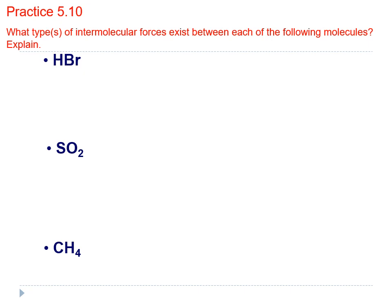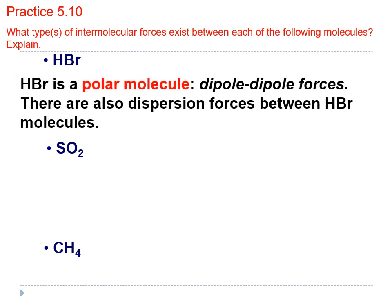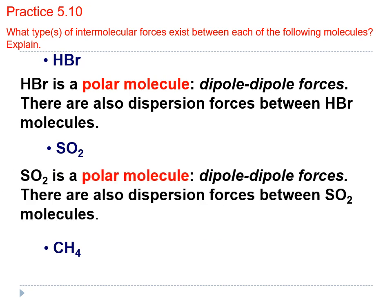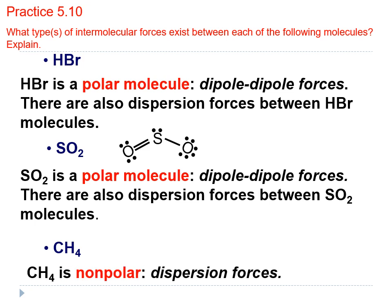Let's do Practice 5.10 together. The question asks what types of intermolecular forces exist between each of the following molecules. HBr is a polar molecule, so it has dipole-dipole forces. London dispersion forces also exist between HBr molecules. SO2 has a lone pair and a bent shape, so it is polar — it also has both dipole-dipole and London dispersion forces. CH4 is a non-polar, symmetrical molecule, so it only has London dispersion forces.